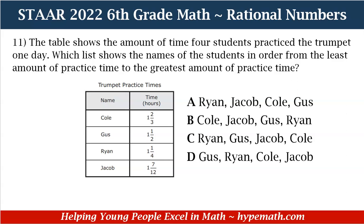The answer choices are: A. Ryan, Jacob, Cole, Gus. B. Cole, Jacob, Gus, Ryan. C. Ryan, Gus, Jacob, Cole. D. Gus, Ryan, Cole, Jacob. So let's look at our table. On the left-hand side are the names of the students, and on the right-hand side is the time in hours that they practiced. Cole: 1 and 2 thirds. Gus: 1 and 1 half. Ryan: 1 and 1 fourth. Jacob: 1 and 7 twelfths.